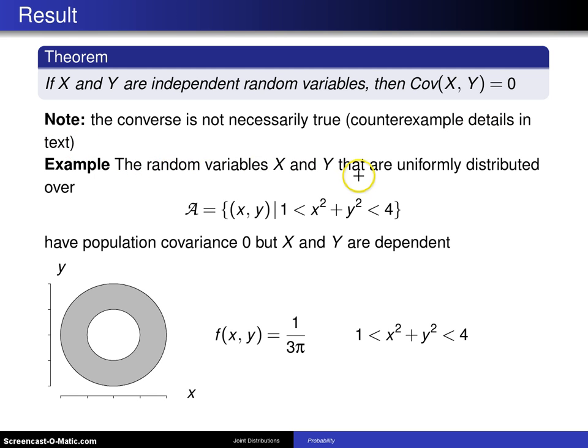The random variables X and Y are uniformly distributed over the support script A, which is all (x,y) values such that 1 < x² + y² < 4.